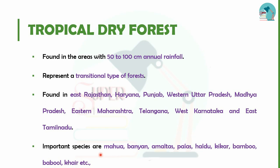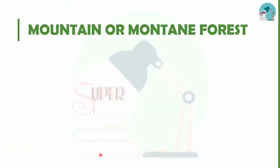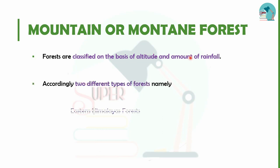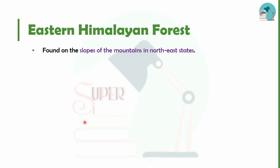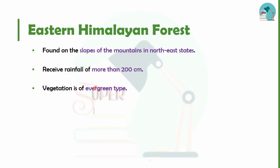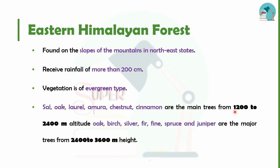Next are mountain forests. These are classified based on altitude and amount of rainfall into two types: East Himalayan Forest and West Himalayan Forest. The East Himalayan Forest is on the north-east mountain slopes and receives rainfall above 200 cm, supporting evergreen vegetation. At altitudes of 1200–2400 meters, trees include Sal, Oak, Laurel, Amura, and Chestnuts. Above that, at higher altitudes, Oak, Birch, Silver Fir, Pine, Spruce, and Rhododendron are found.